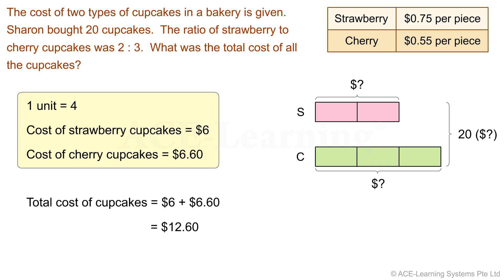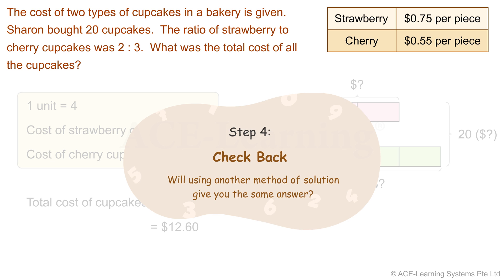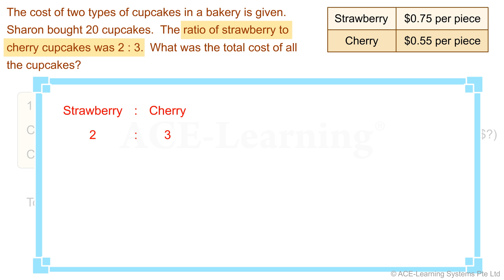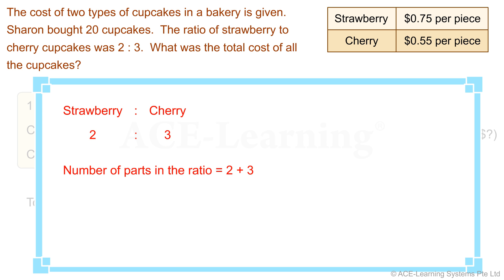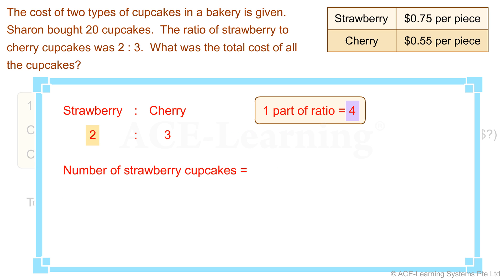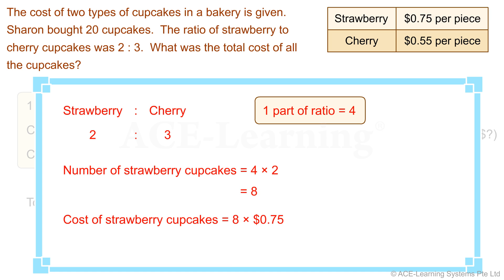Have we got the correct answer? Let's find out in the next step. Step 4: Check back. Will using another method of solution give you the same answer? We can solve this problem another way. The ratio of the quantities of the two types of cupcakes is given. Total number of parts in the ratio equals 2 plus 3, which is 5. So 5 parts equals 20, and 1 part equals 4. The number of strawberry cupcakes is 4 times 2, which is 8. The cost is 8 times 75 cents, which is 6 dollars.